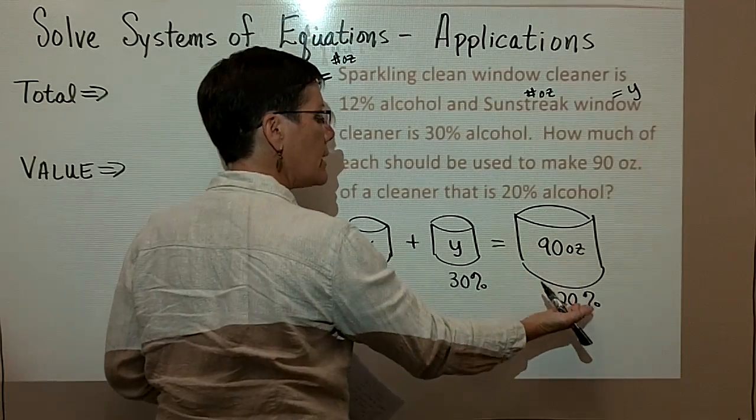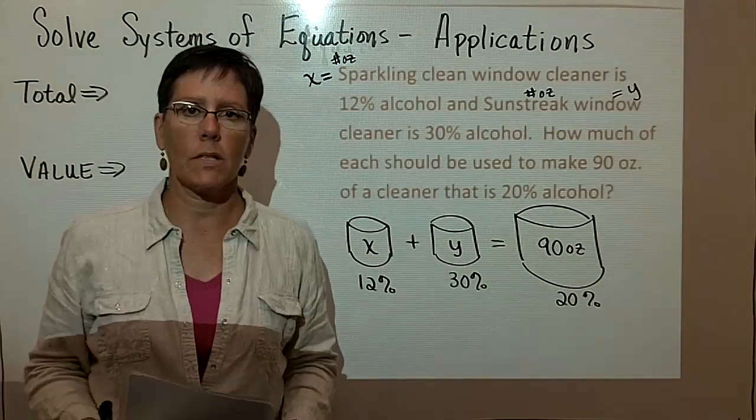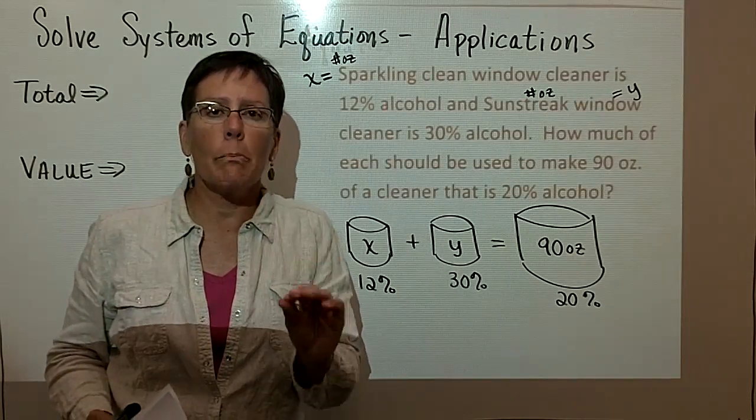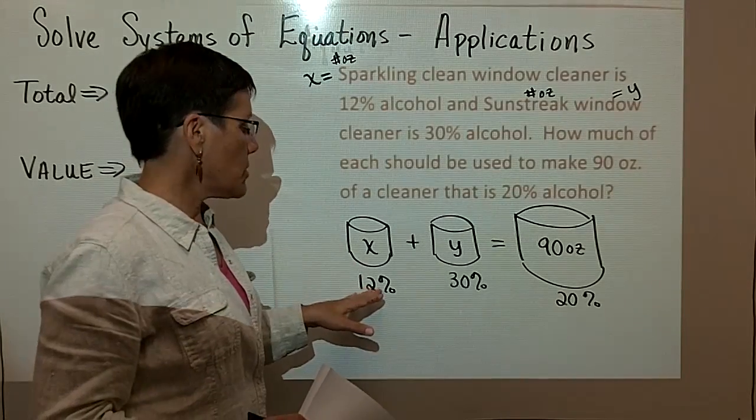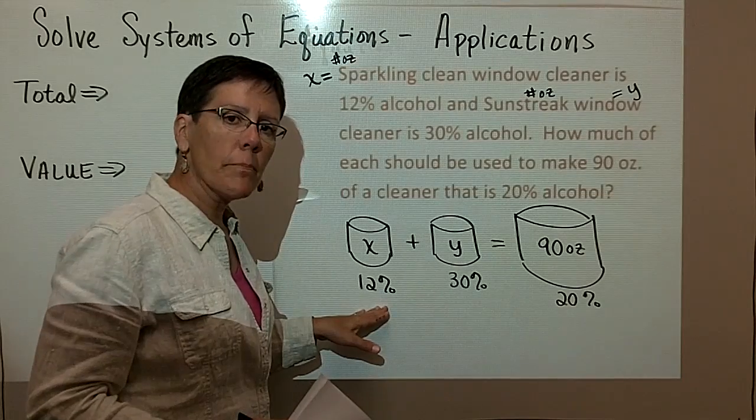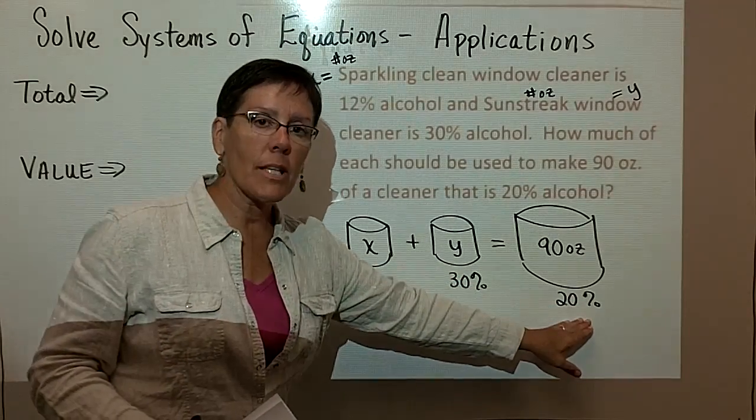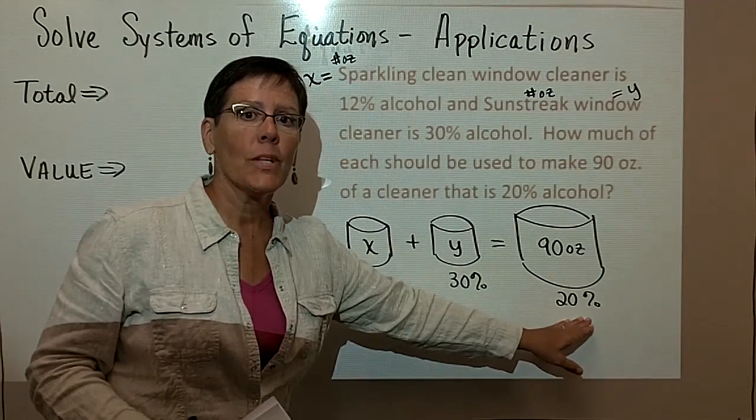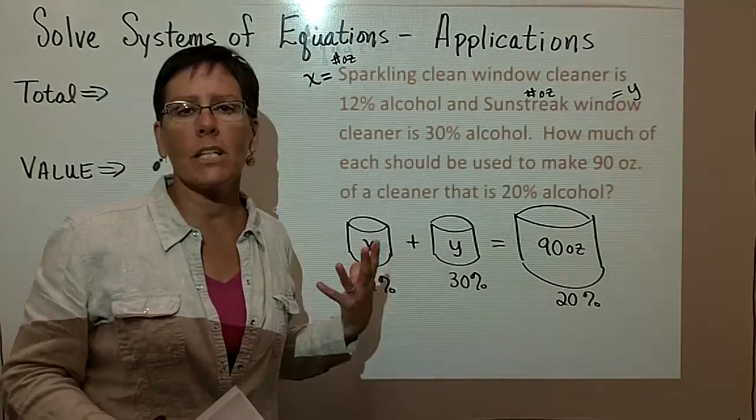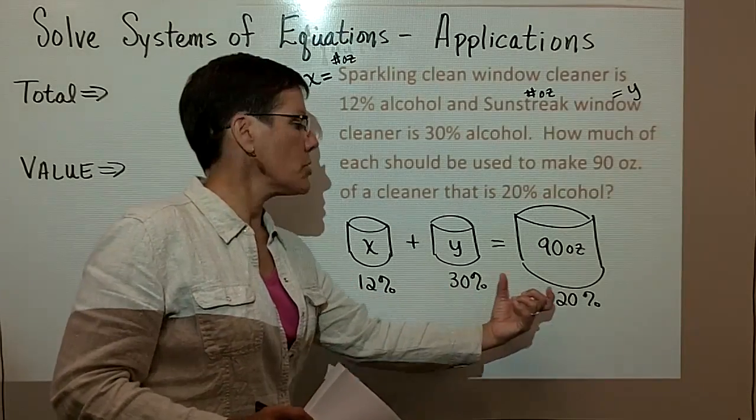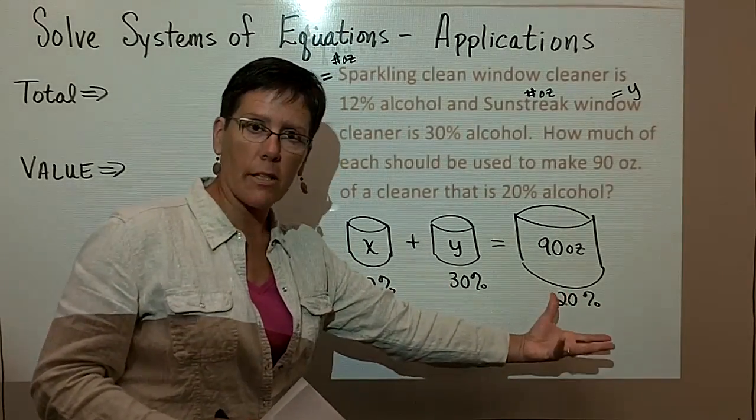Again, I want to make 90 ounces of a 20% solution. So to understand these kinds of mixture problems, one of the best things you can do is understand that you've got to use something weaker with something stronger to create something that's in between those two.